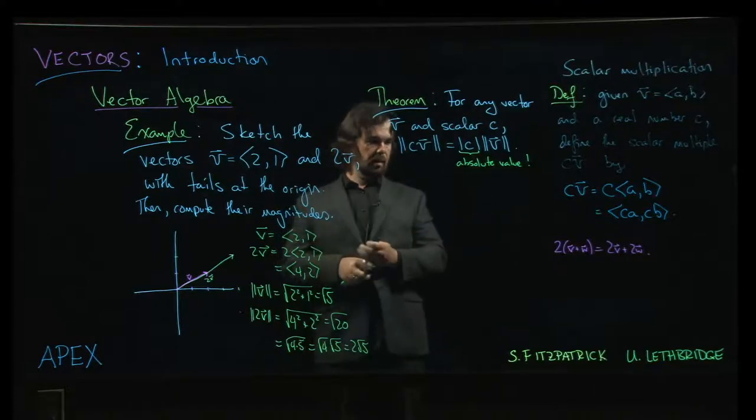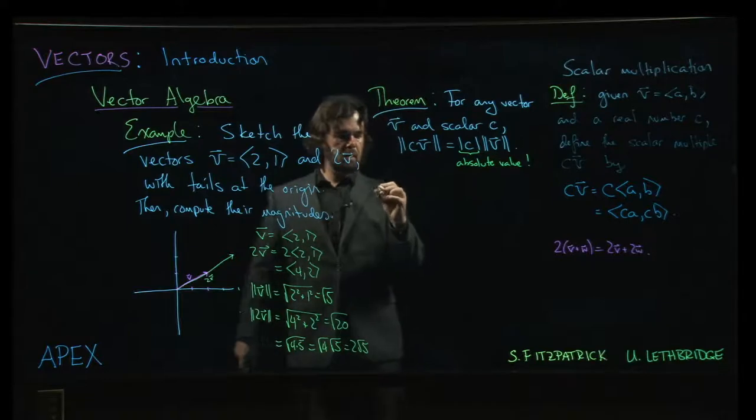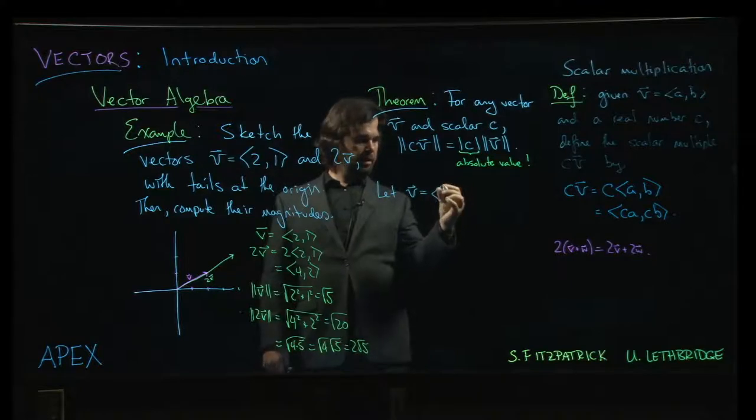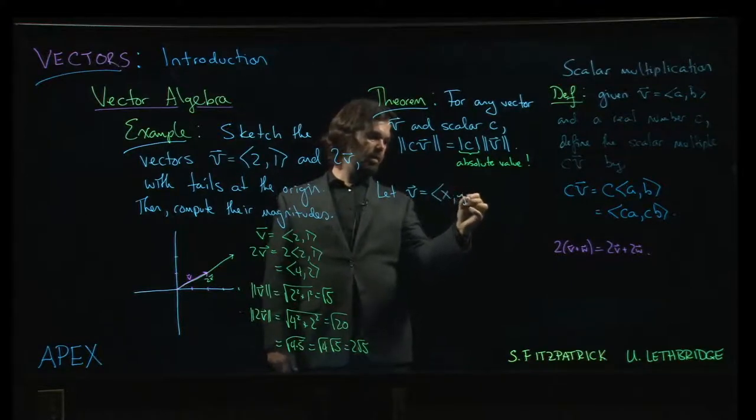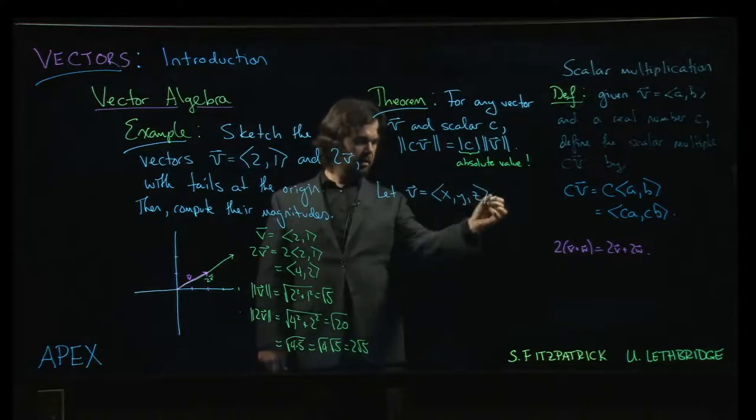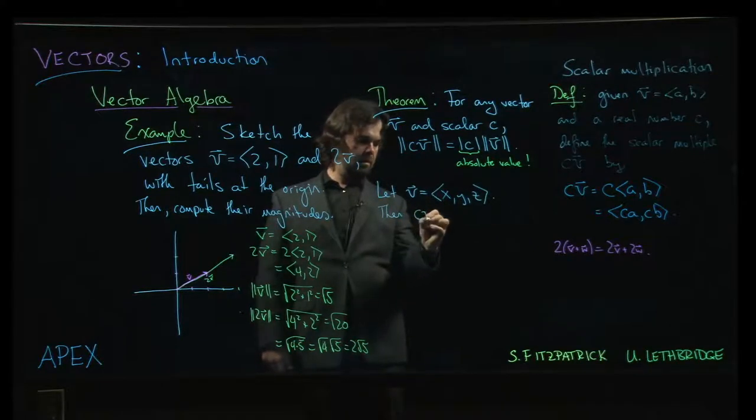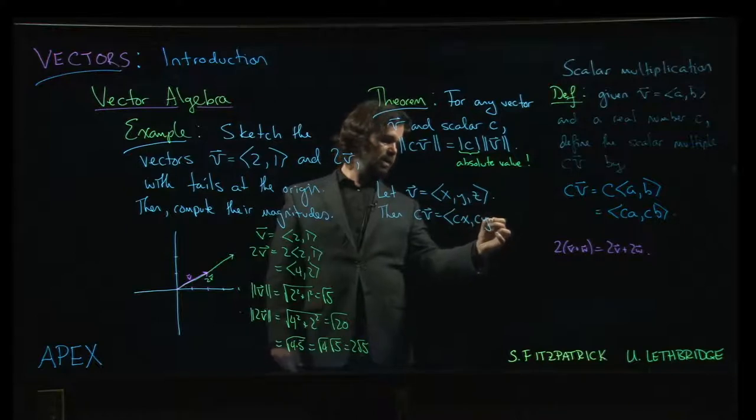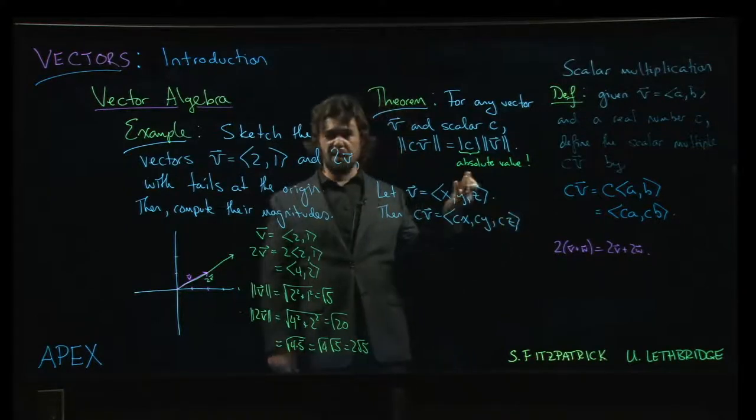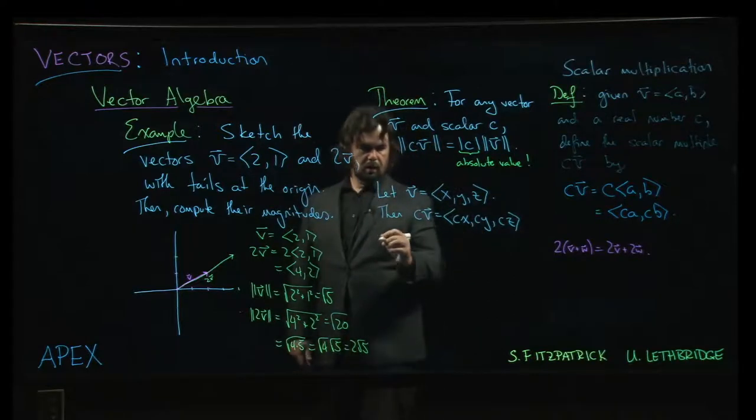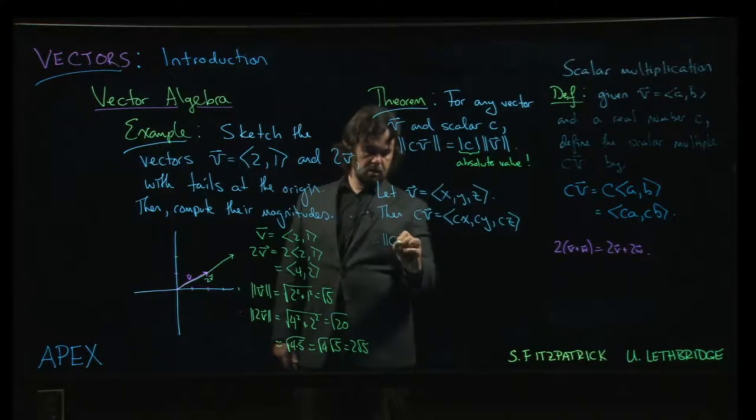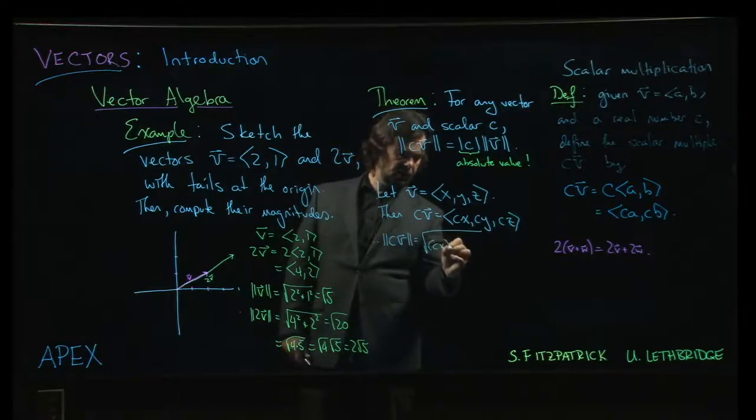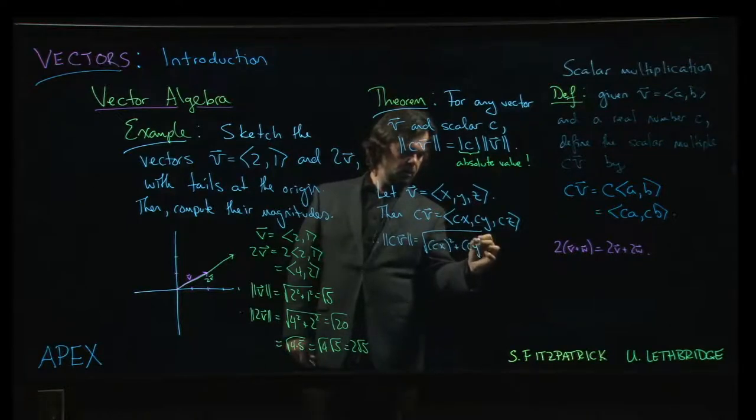So let's see how this works. Well, if we let v equal to, let's say, let me use x, y, z. Okay, so then c times v, using our definition, is going to be cx, cy, cz. I'm doing it in three dimensions, but you can also do it in two. Okay, well then if I wanted to do the magnitude of c times v, by definition that is the square root of (cx)² + (cy)² + (cz)².